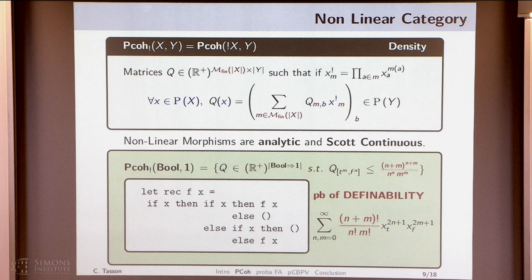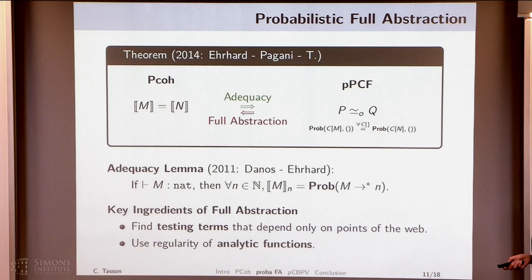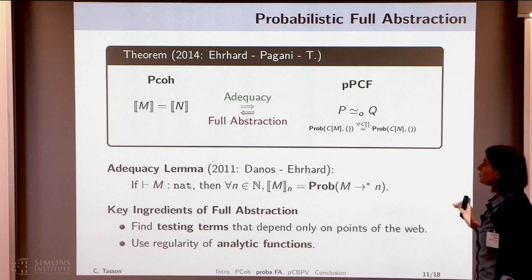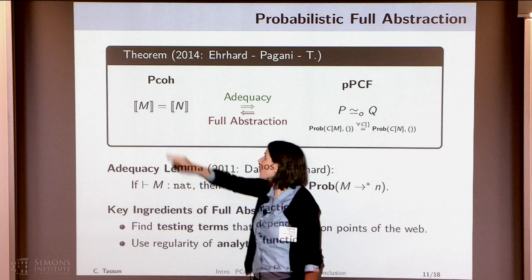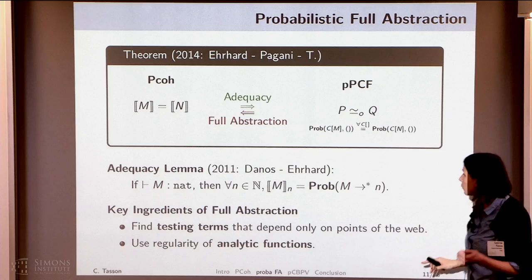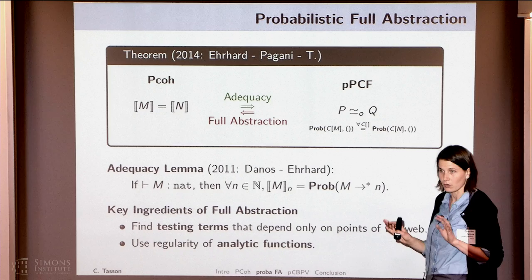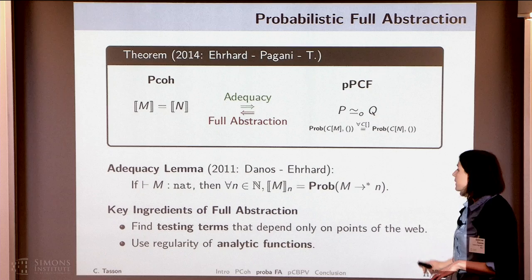Although we have this problem of definability, we have full abstraction. The adequacy direction is quite easy. For full abstraction, we reason by contradiction and suppose that two matrices are different — so they differ on one index. The trick is to define testing terms that do not depend on M or N, but depend on the index on which they differ. Then we use the analyticity and regularity of our functions to conclude.